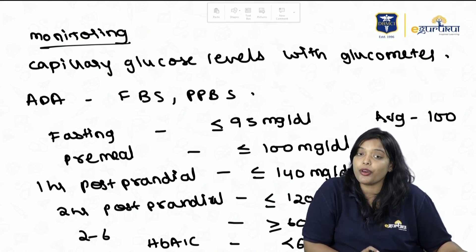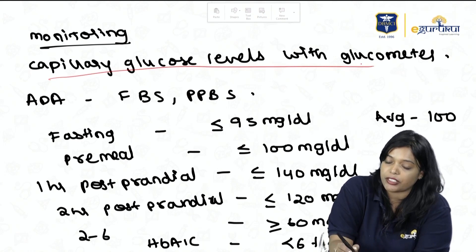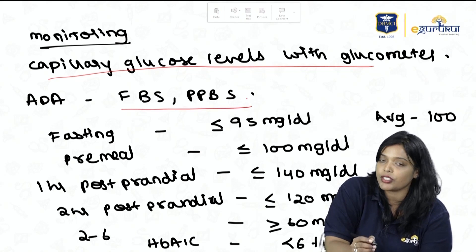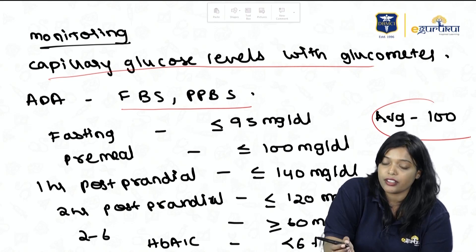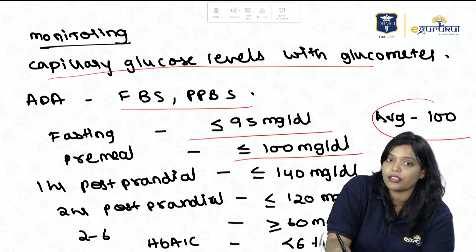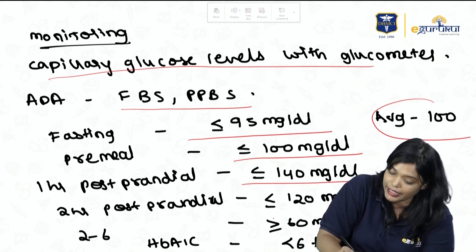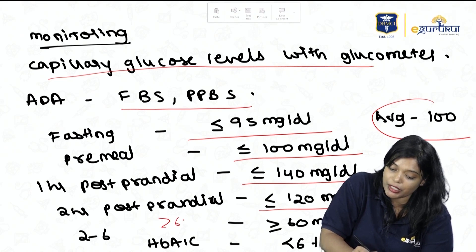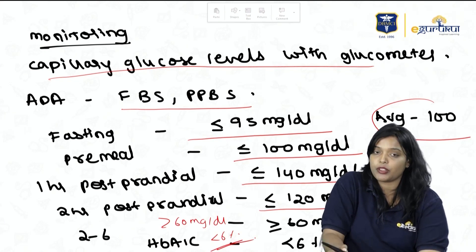For monitoring, use capillary glucose levels with a glucometer, or the ADA recommends FBS and PPS. Blood sugar targets: fasting ≤95, pre-meal <100, 1-hour postprandial <140, 2-hour postprandial <120, and between 2–6 AM it should be more than 60 mg/dL. HbA1c should be maintained less than 6%.